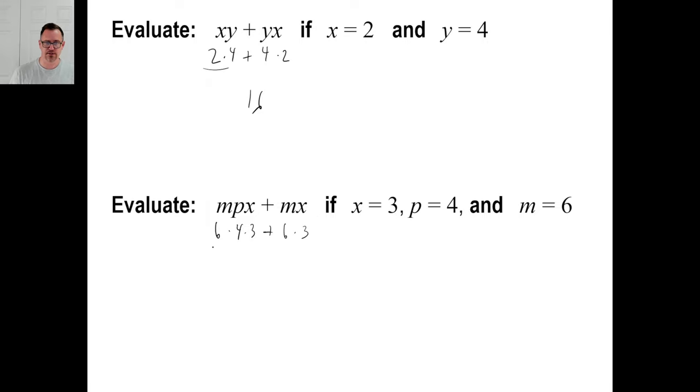Okay. Well, 6 times 4 is 24. By the way, if you want to do this in a different order, you could. Let's do it that way. It would probably be easier. 4 times 3 is 12. 6 times 12. We know that times table. That's 72. Plus 6 times 3. There we go. 90. All numbers to it. All right.